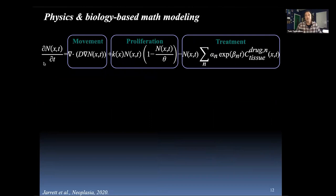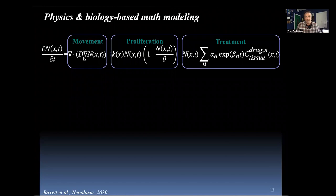Here is an example of a mathematical model. The left-hand side is the rate of change of the number of cells N at position X and T with respect to time, which equals three components: how the cells are moving around, how they're proliferating, and how they're responding to treatment. This is a diffusion term — one derivative in time, two derivatives in space. Then we have logistic growth up to a carrying capacity theta, and treatment efficacy.